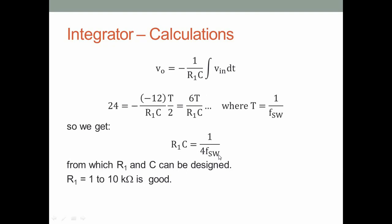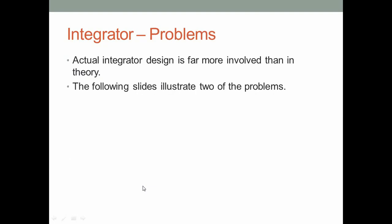Since f_sw is given, you can design for R1 and C such that the integrator gives the ideal outputs. Usually the range for R1 would be 1 to 10 kΩ — you choose your own value.